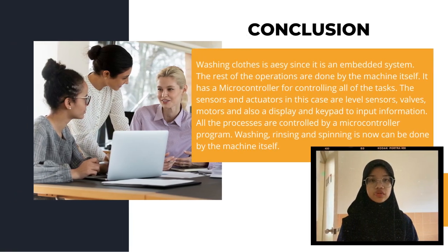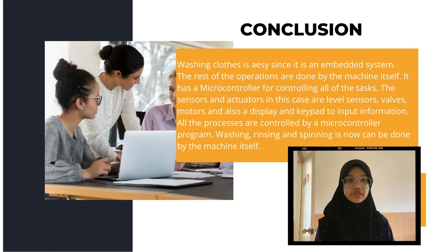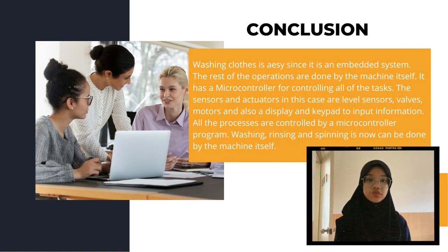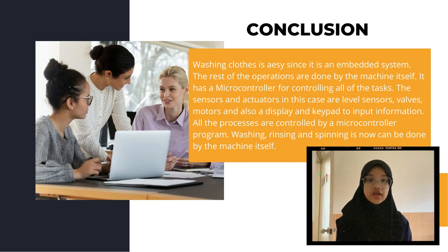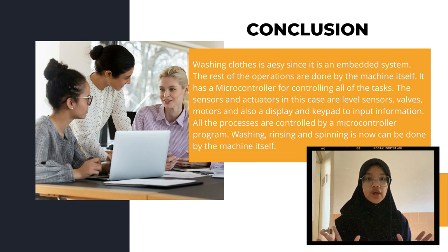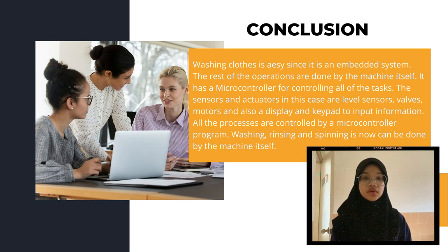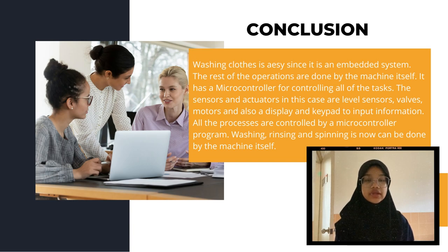In conclusion, washing clothes is not a difficult task since it is now handled by an embedded system. You just add clothes and leave them to the machine — the rest of the operations are done by the machine itself. The washing machine has a microcontroller for controlling all tasks, with level sensors, valves, motors, a display, and keypad for input. Closing and opening of valves for adding water is checked through level sensors by the PIC microcontroller. The timings for each cycle can be easily changed through the keypad, and washing, rinsing, and spinning are all done by the machine.